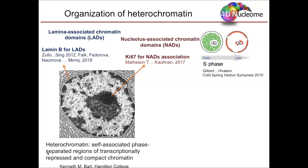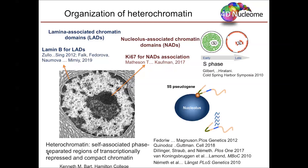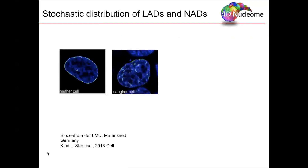NADs were characterized previously in human cells, and we were interested in understanding NAD composition and function in mouse murine models. There is growing evidence that nucleoli act as a silencing hub, with an example from the Mangusen lab indicating that targeting a gene to the nucleolus periphery can lead to transcriptional silencing of that gene.